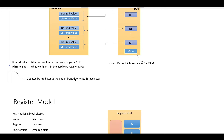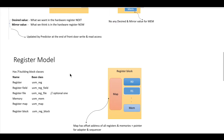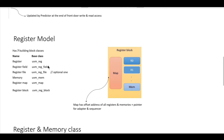What is frontdoor and backdoor access — we already discussed that in the previous video. If you want to define a register model, this register model has 7 building block classes in it. The register itself has a base class of UVM reg.